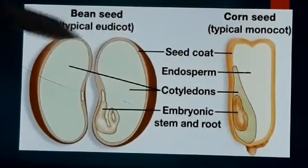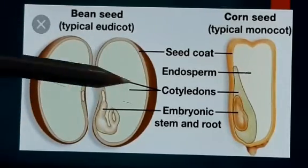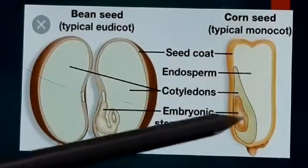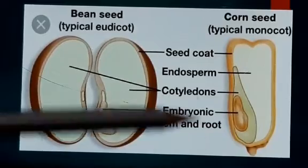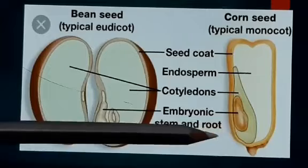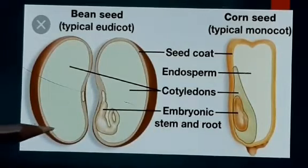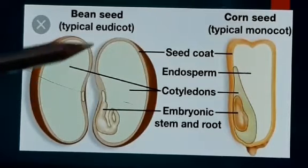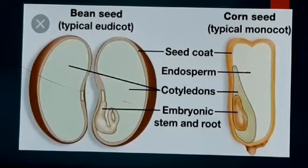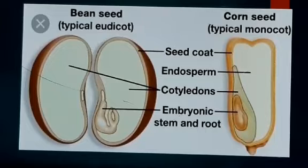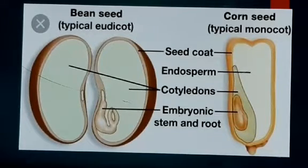On the basis of the number of cotyledons, seeds are of two types: monocot seed and dicot seed. When the cotyledon is one or single in a seed, that seed is known as a monocot seed. When the number of cotyledons is two, it is known as a dicot seed. If more than two, it is called multicot, but usually we refer to dicot and monocot. Examples of monocot seeds are maize and all cereals — wheat, rice, maize — they are all monocot seeds.